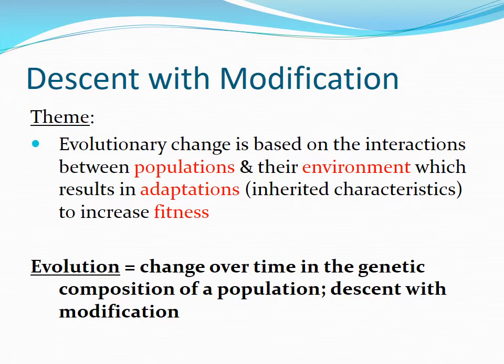What is evolution? The best definition of evolution is that it's change over time in the genetic composition of a population, also known as descent with modification. Evolution does not explain how or why something occurs — it just says that over time, the genes of a population will change.